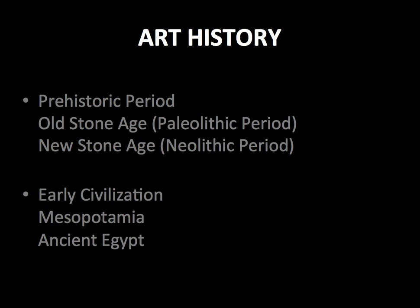We start with the prehistoric period — what we call the prehistoric period is basically our old stone age and new stone age, the Paleolithic and then the Neolithic period. After that we'll look at early civilizations and a couple of those cultures.